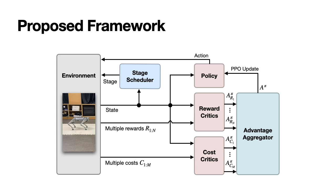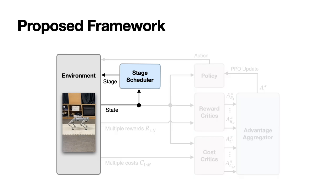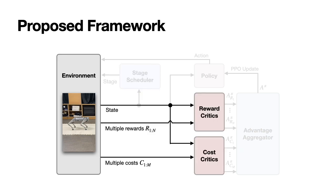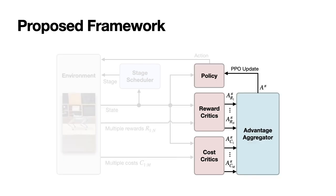This is our final framework. A stage scheduler automatically transitions the current stage according to a user-defined rule. The environment provides multiple rewards and costs, and the policy is updated in the form of PPO by calculating a unified advantage function using each reward and cost advantage.